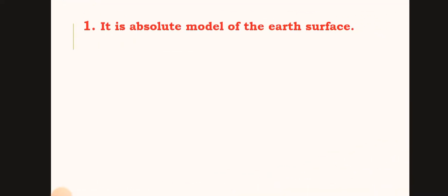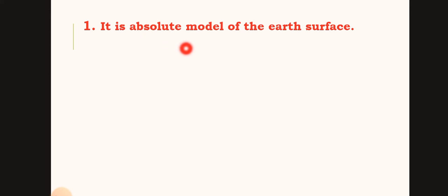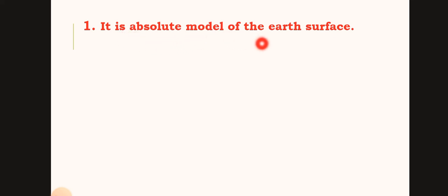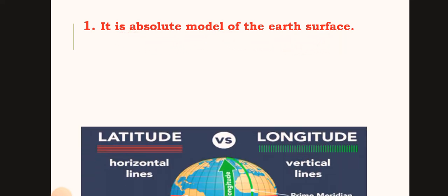The first property of the globe is that it is an accurate model of the earth's surface. That is called a globe — a globe is an accurate model of the earth's surface.